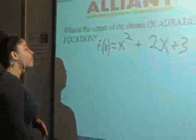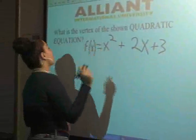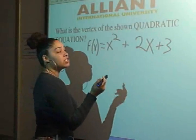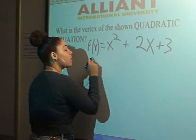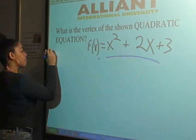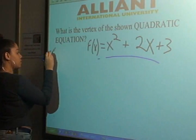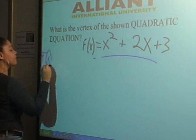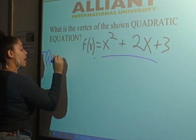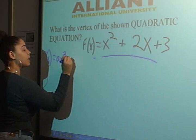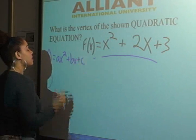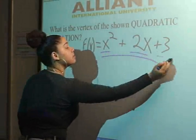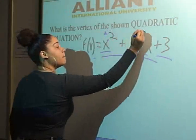Here we have a question: what is the vertex of the shown quadratic equation? f(x) = x² + 2x + 3. This quadratic equation comes from the original form ax² + bx + c, where a = 1, b = 2, and c = 3.